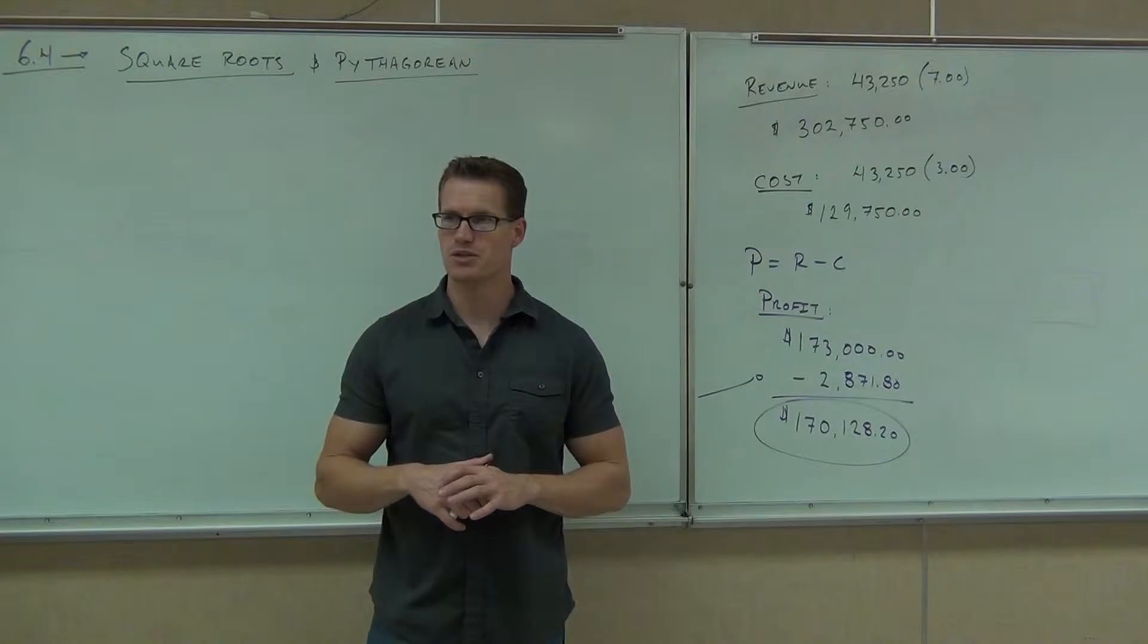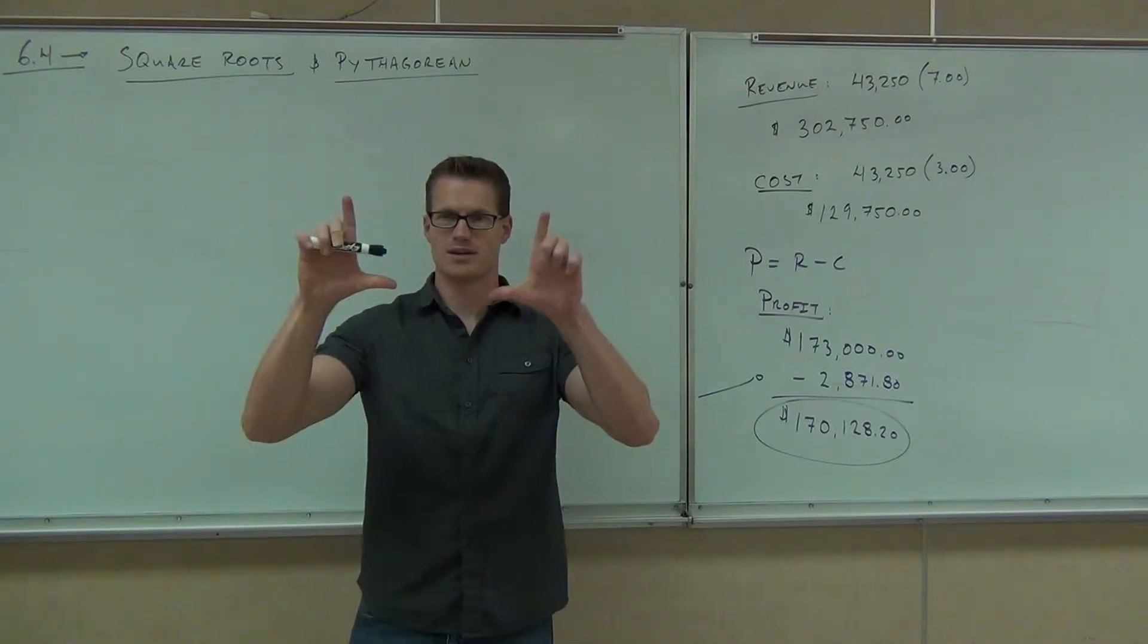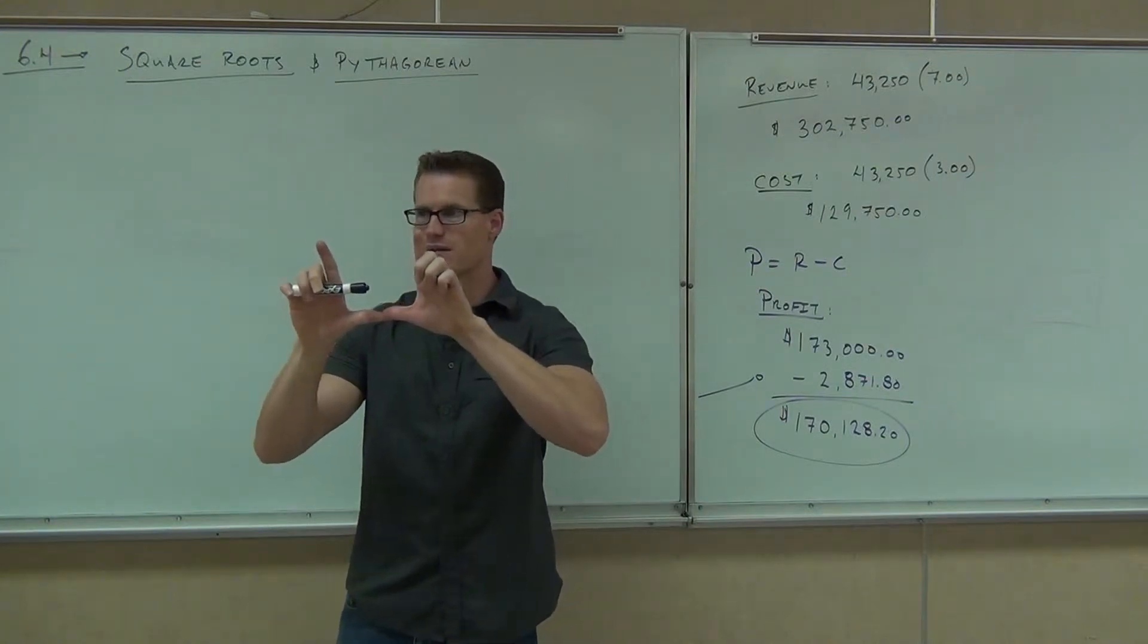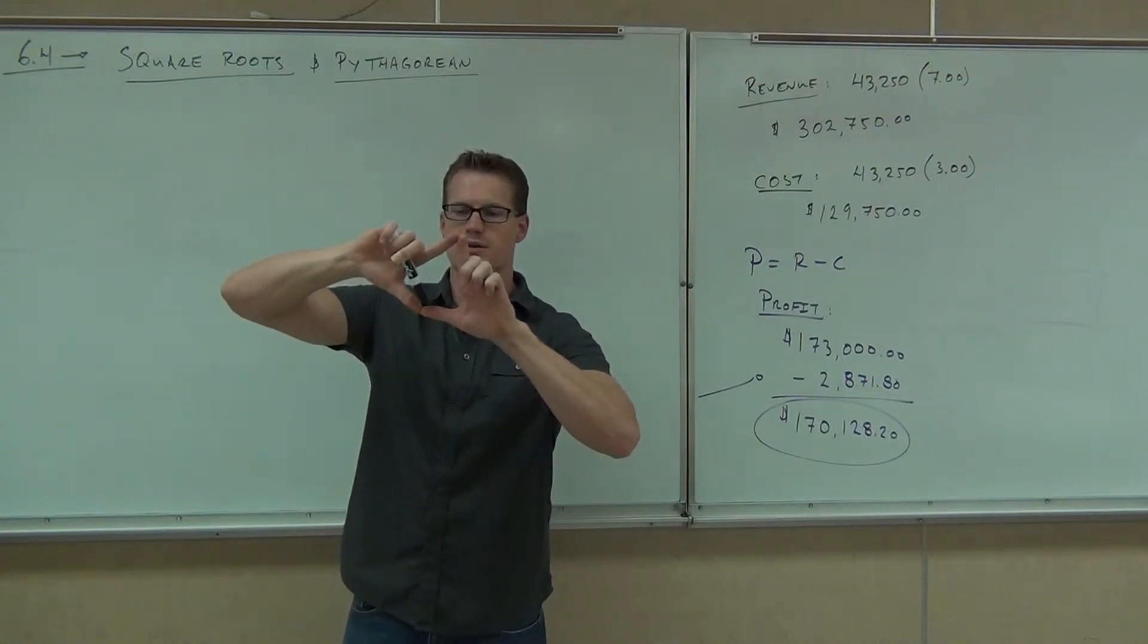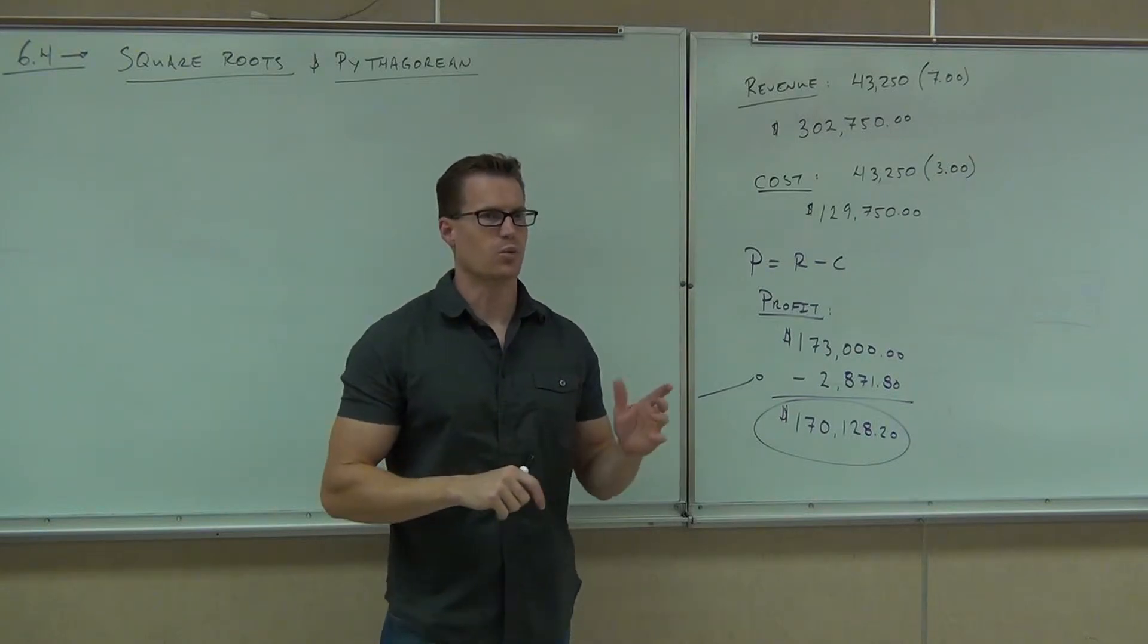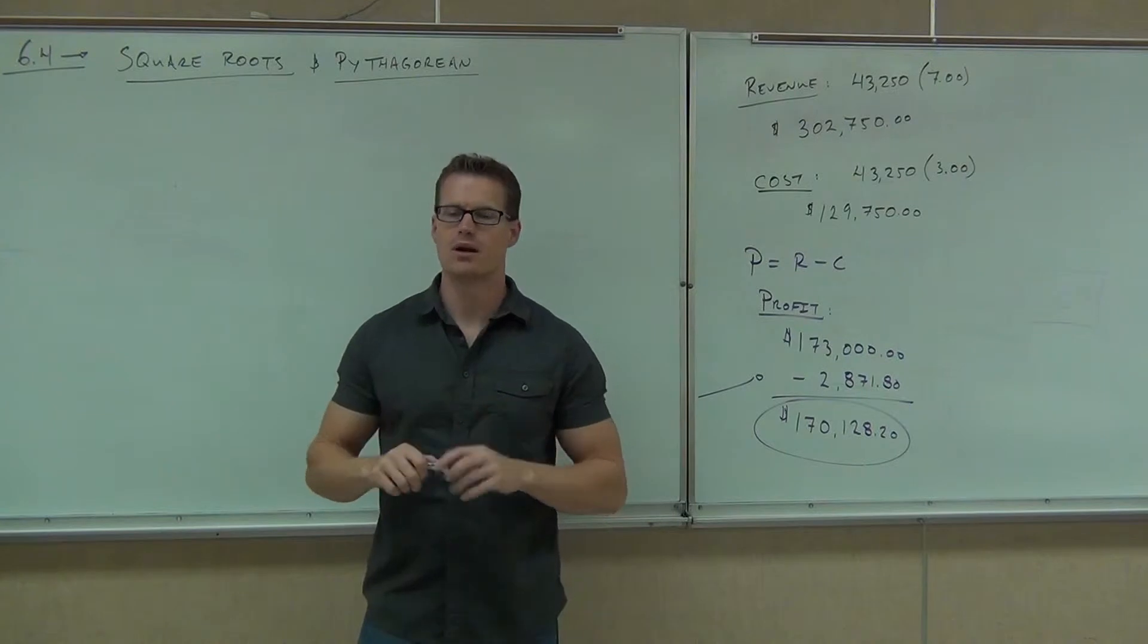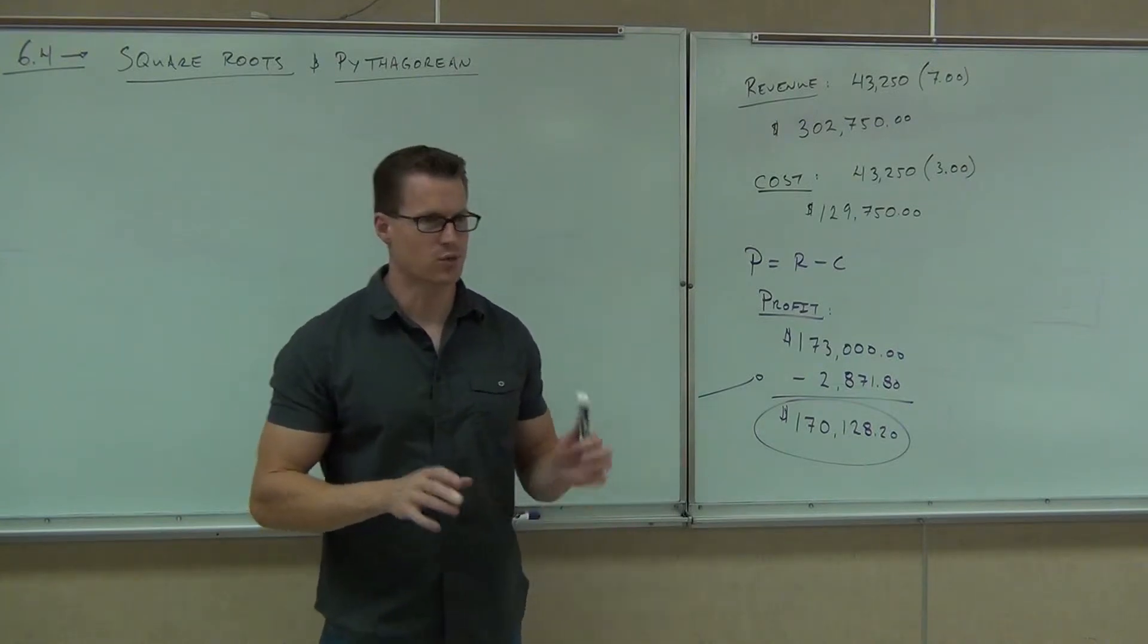That would be like this, right? That would be an open rectangle. Okay, you can't have that. But if one of them is 90 degrees, you've got yourself a right triangle. We're going to talk about a right triangle and the Pythagorean theorem. But before we get there, you've got to know what a square root is. So we're going to talk about that first.